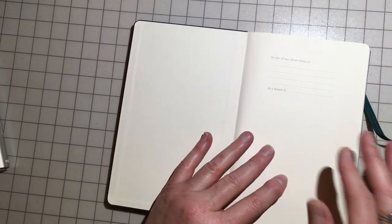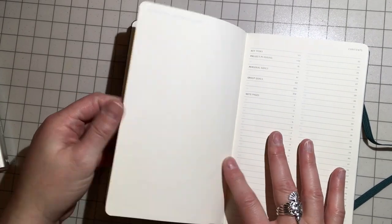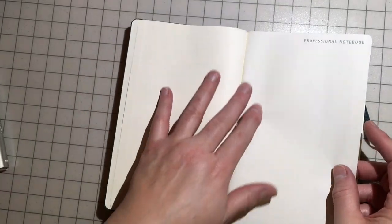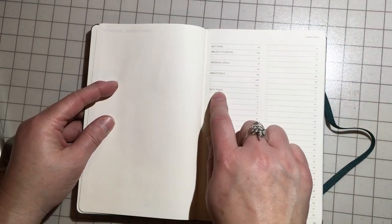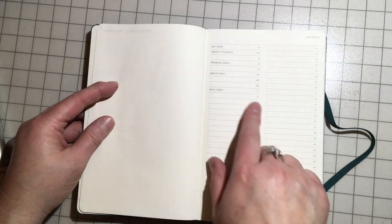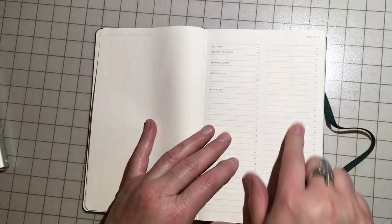So, there's the opening. In case of loss, please return. And, okay. So, you have the professional notebook. There it says. Then you've got key tasks, project planning, personal goals, group goals, note pages. And then your table of contents.